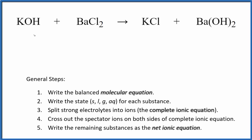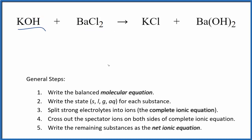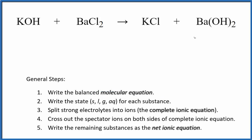Let's write the net ionic equation for KOH plus BaCl₂ — potassium hydroxide and barium chloride. The first thing we do when we balance net ionic equations is balance the molecular equation, and this up here is the molecular equation.